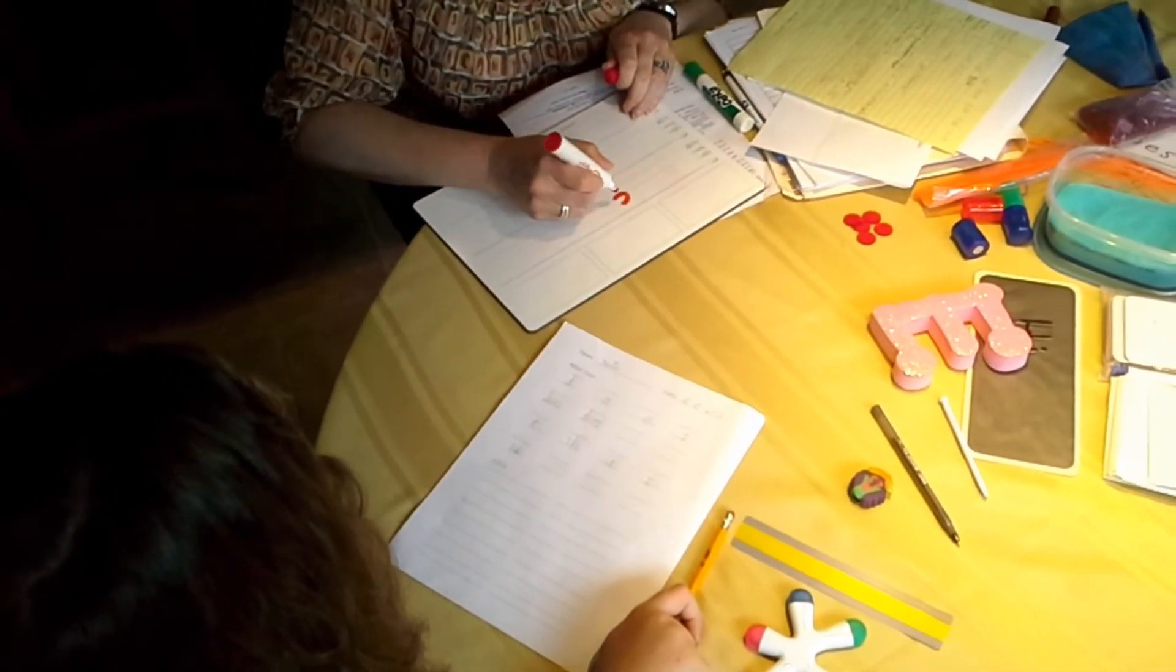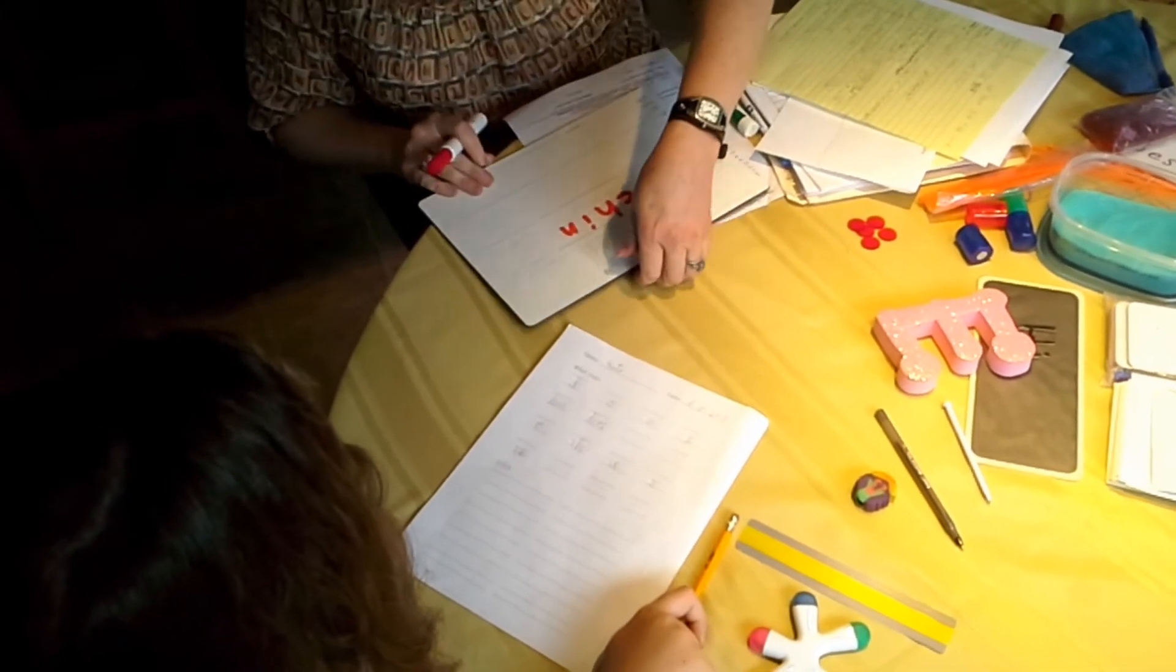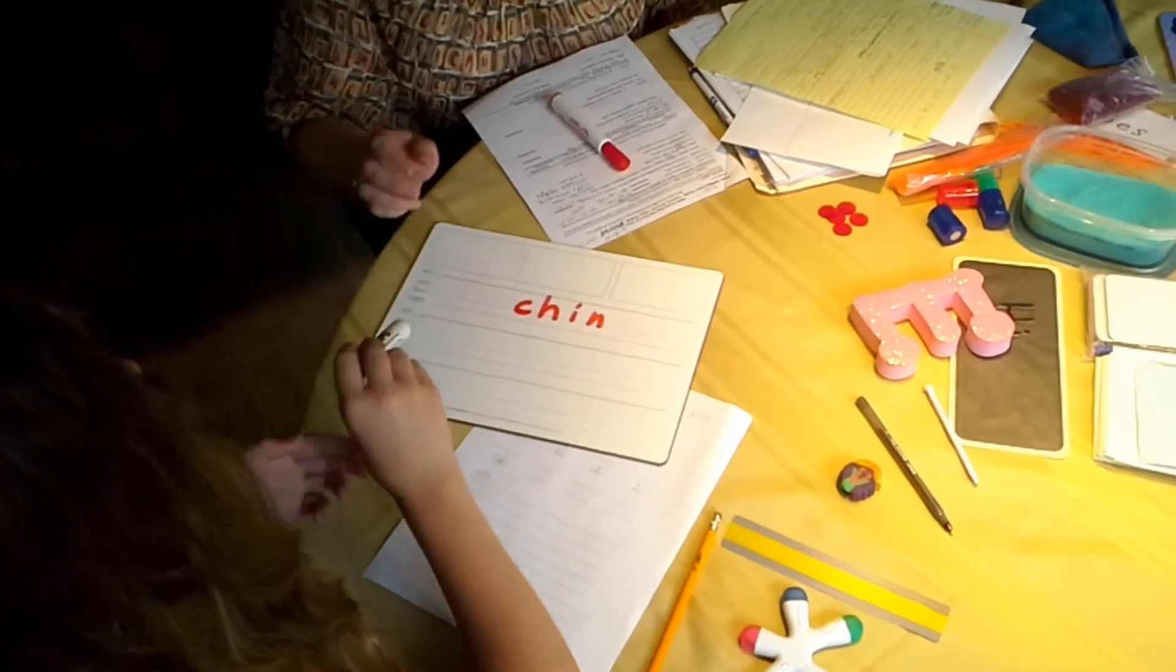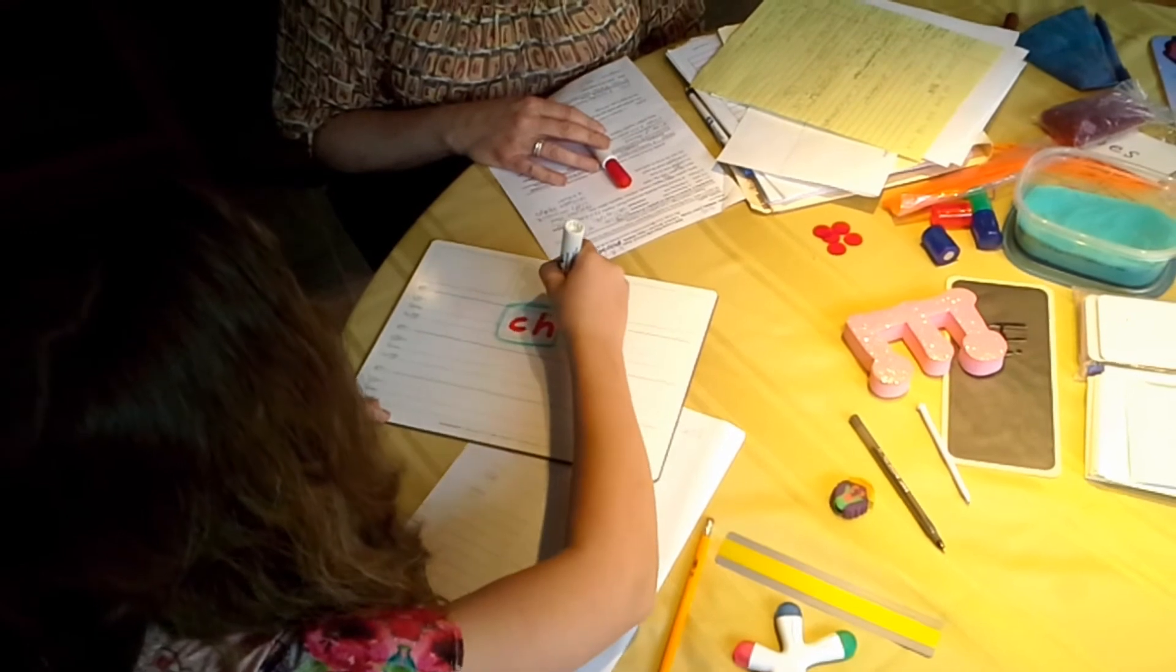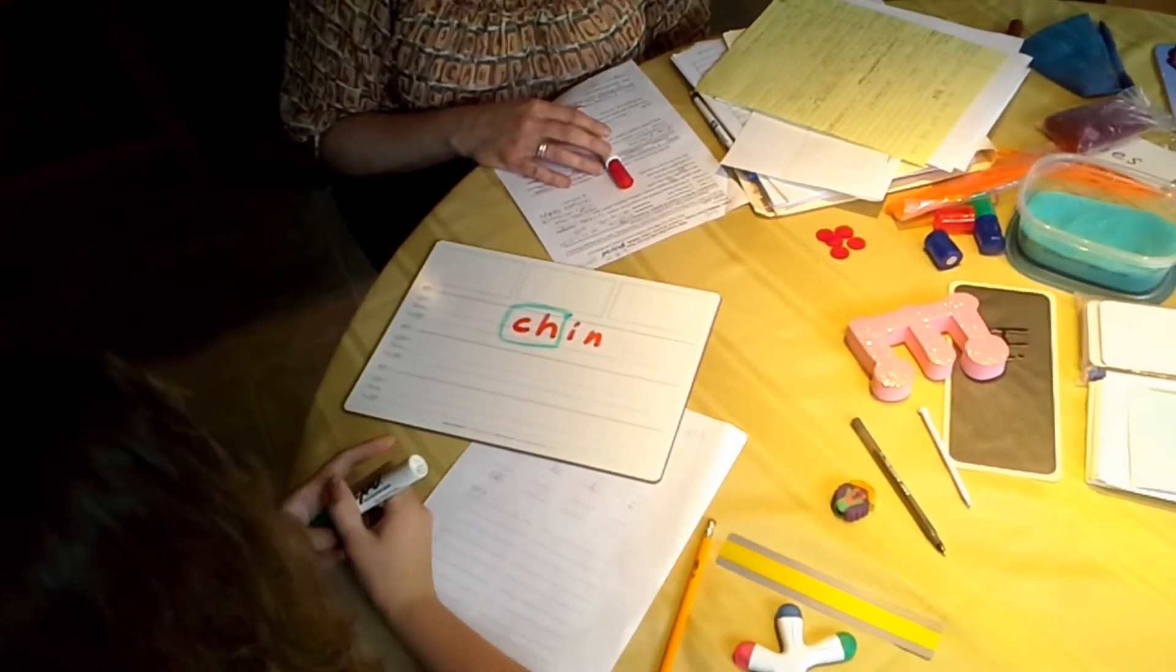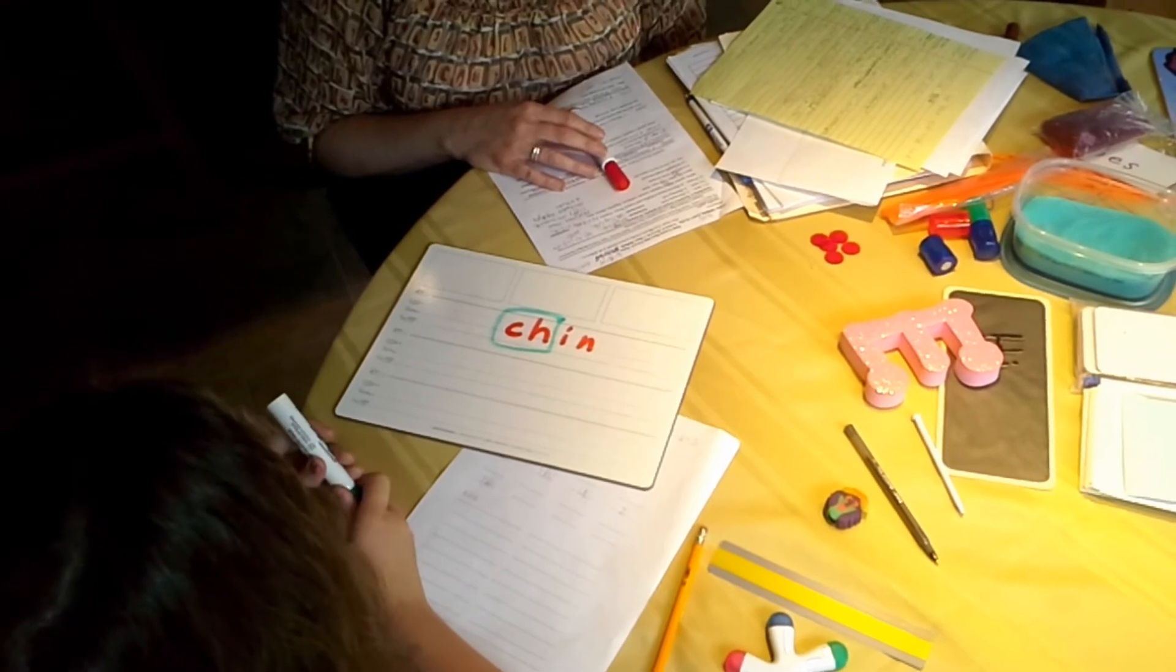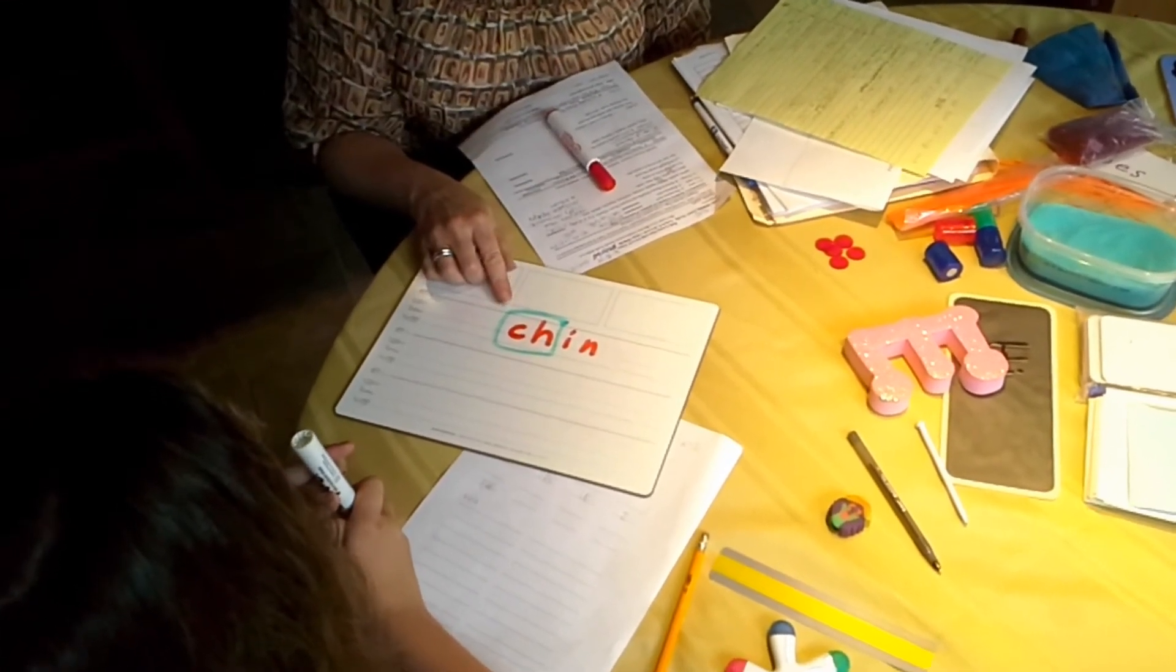I put that sound in a word that we've worked with before. Would you put a box around the letters that go 'cha'? What letters are those? C-H. What sound? Ch. What's your word? Chin. Good. So that's the sound we were just talking about, right? So let's try it again.